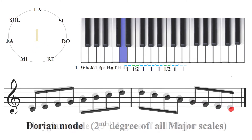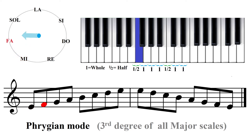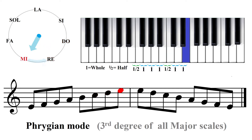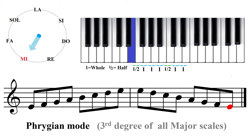Next, moving up to the third degree of Do major, the Phrygian mode beginning on Mi. Mi, Fa, Sol, La, Si, Do, Re, Mi. Mi, Re, Do, Si, La, Sol, Fa, Mi.